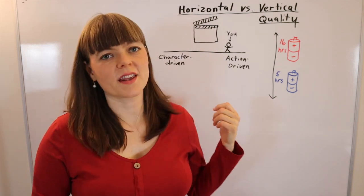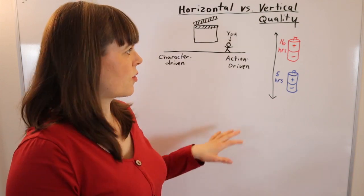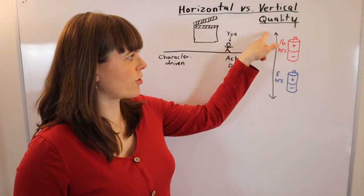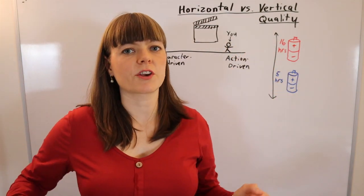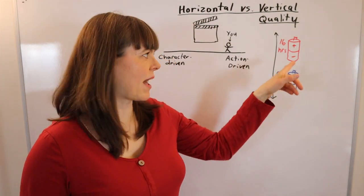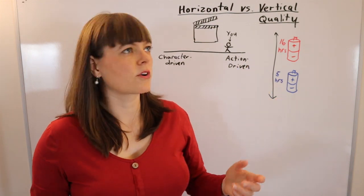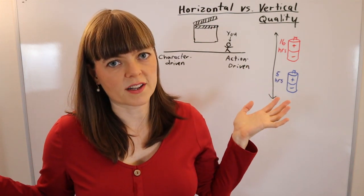I'm going to talk about horizontal quality and vertical quality in economics and business. The basic distinction here is that vertical quality is where everybody would agree that one thing is higher quality than another. For example, batteries that last 16 hours are better than batteries that last five hours. That's vertical quality.